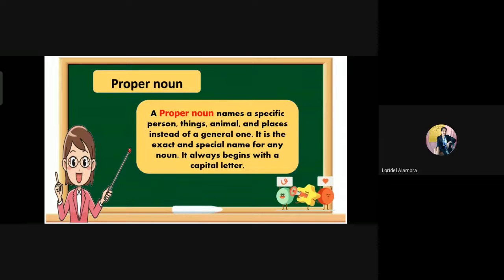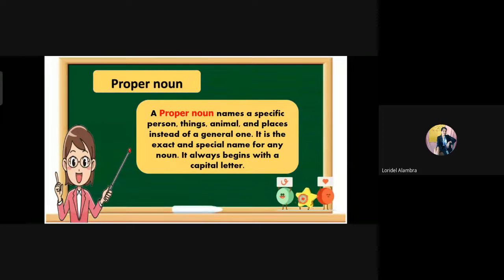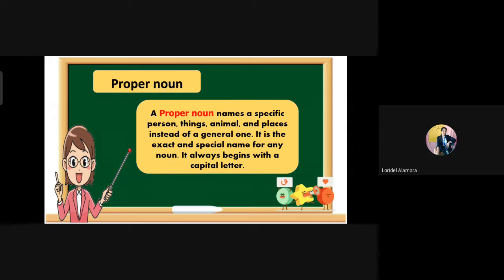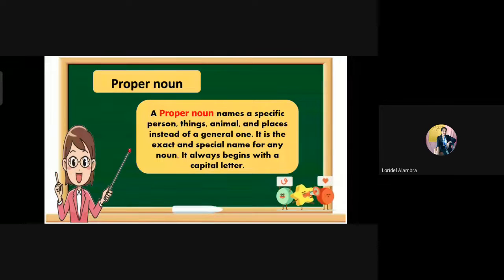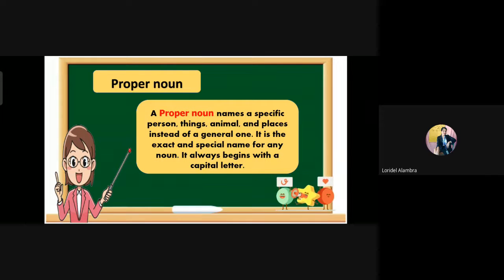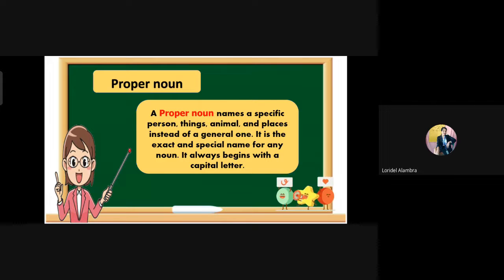Next is proper noun. A proper noun names a specific person, things, animals, and places instead of a general one. It is the exact and special name for any noun. It always begins with a capital letter.